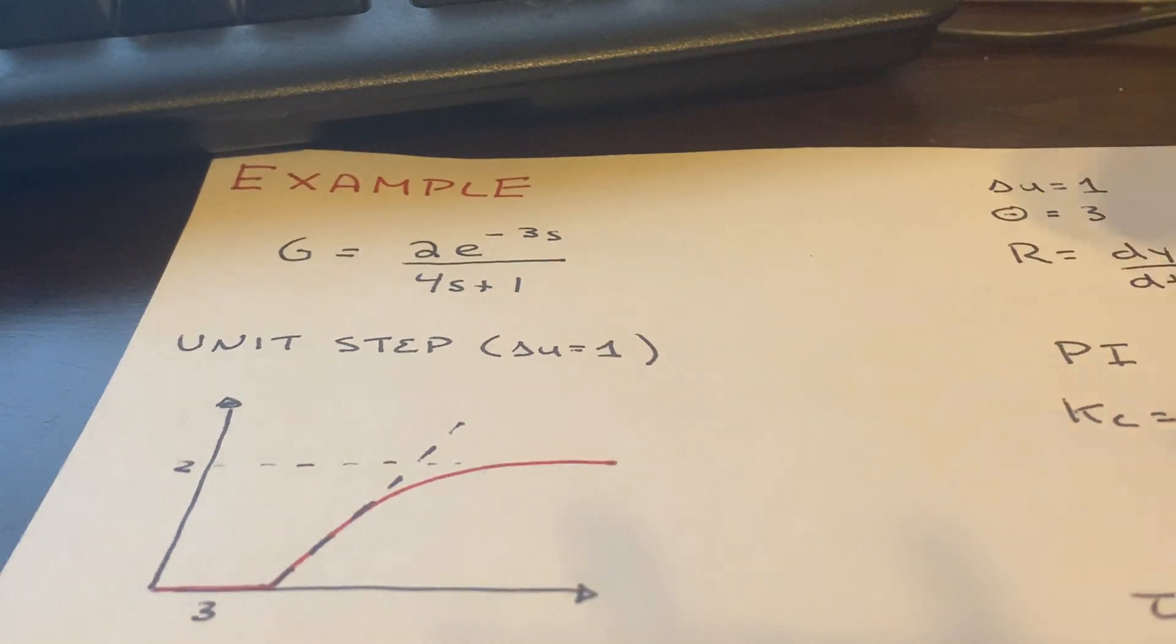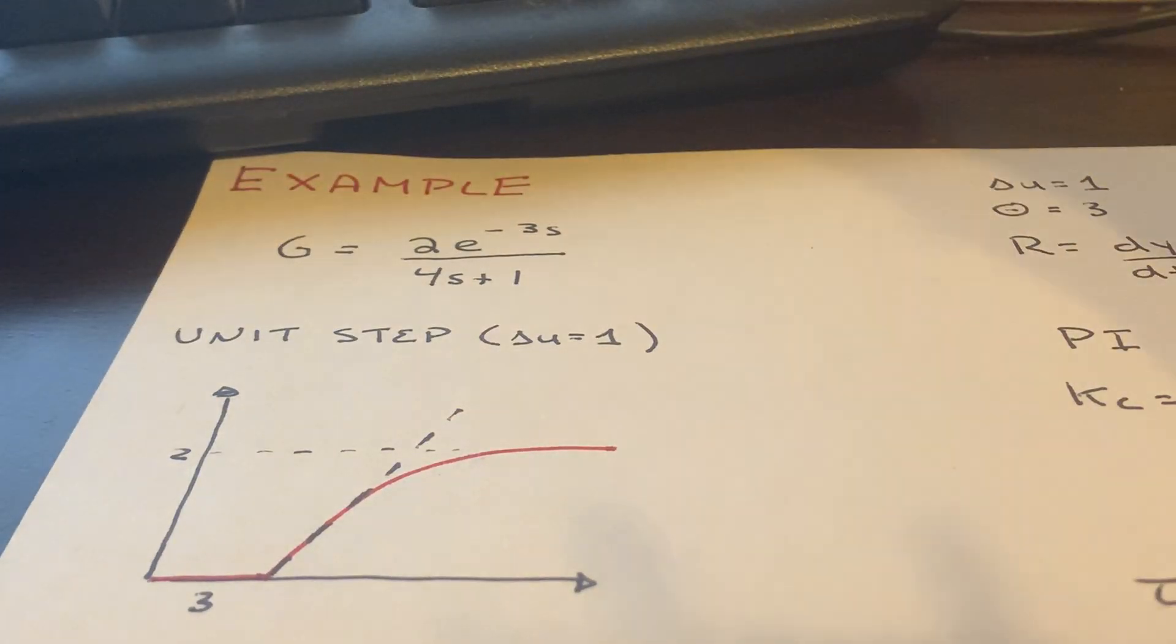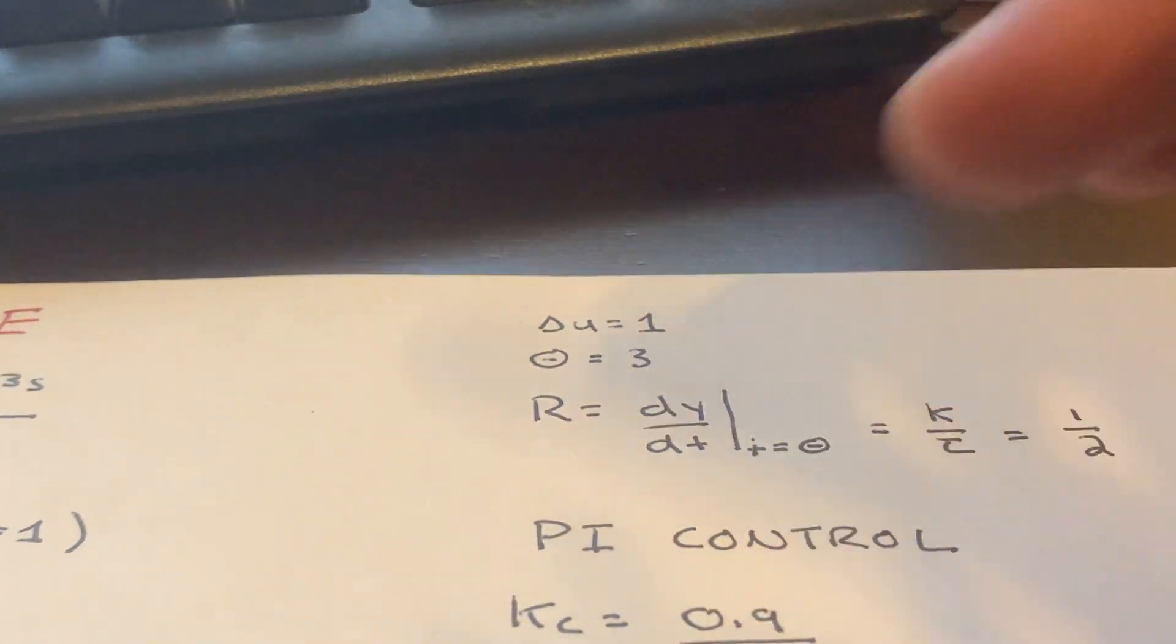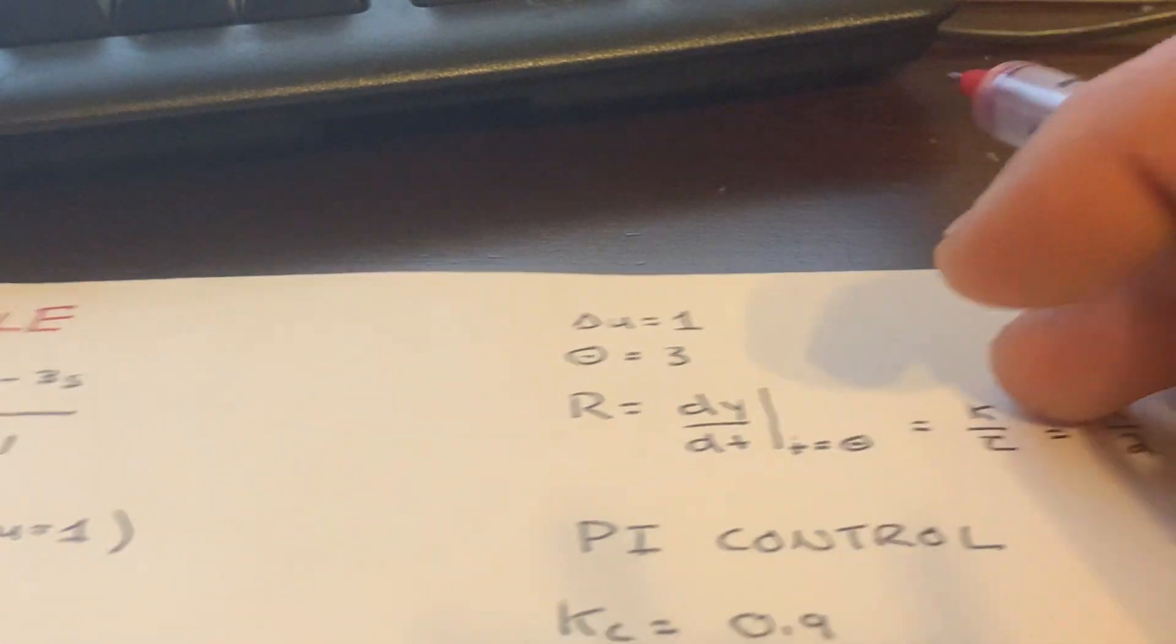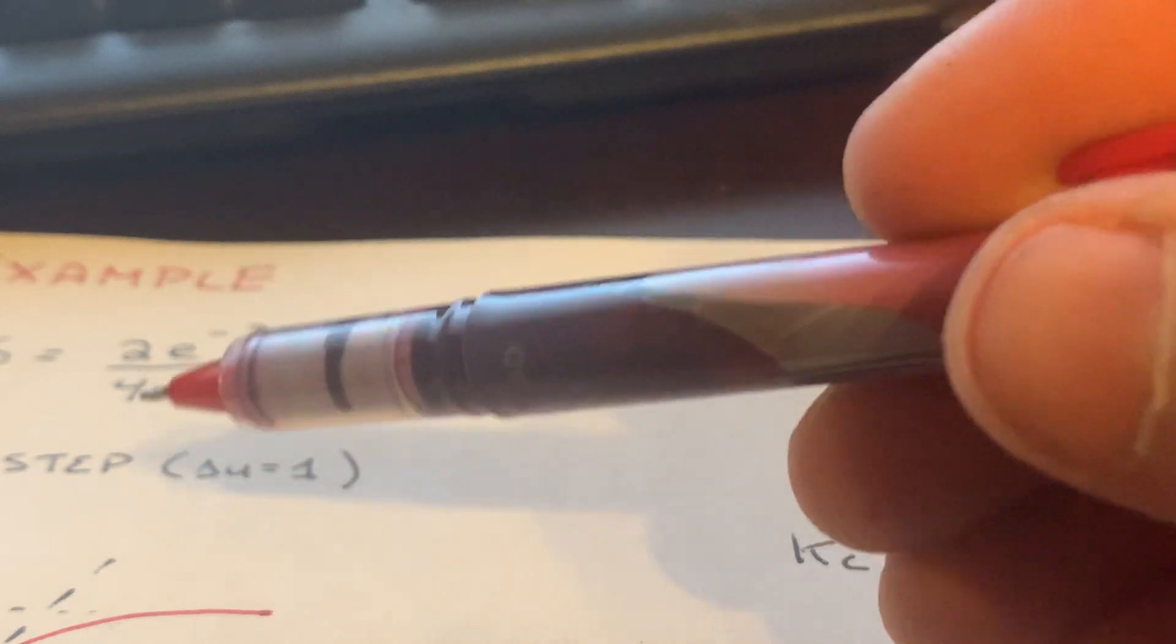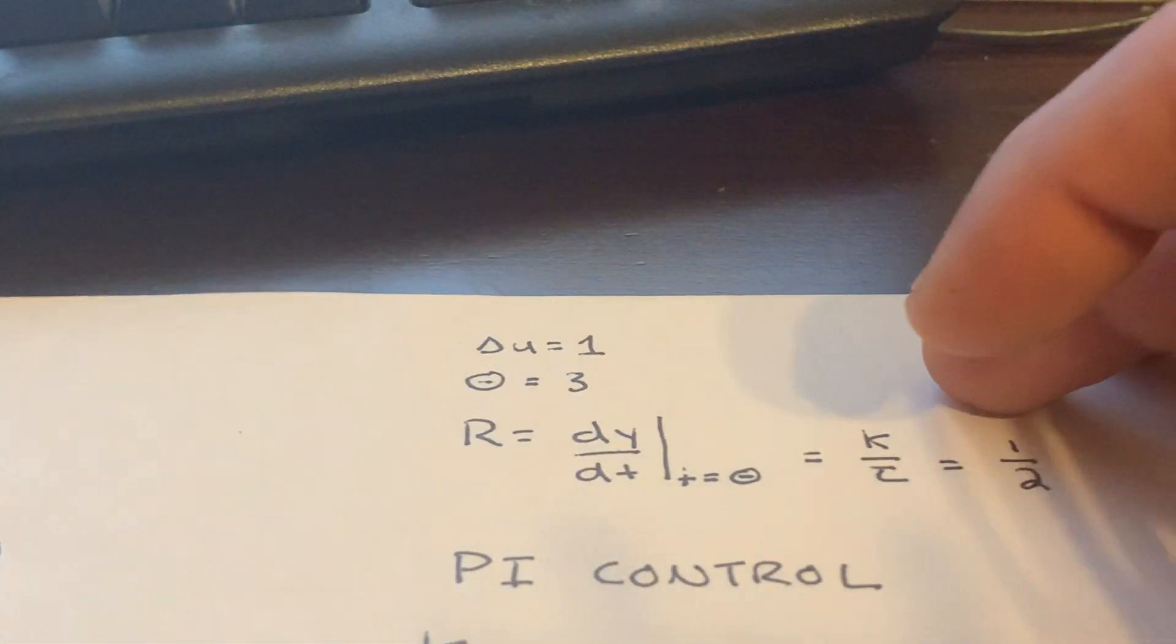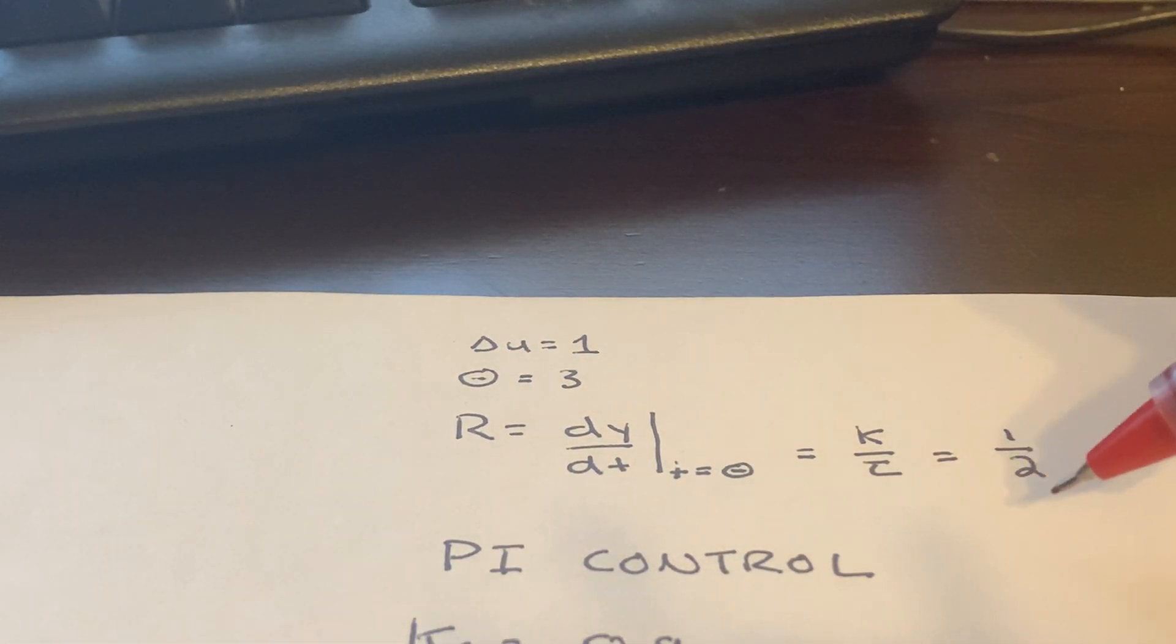Which is effectively t equals 0 for a first order system. If you go back to the analytic solution, this is simply k over tau, is that initial slope. Our k, in our case, is 2, and our tau is 4, which tells us that initial slope is a half.